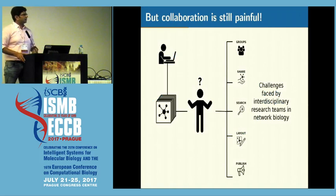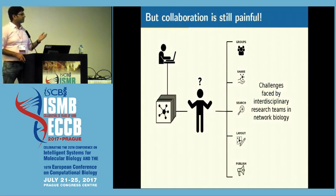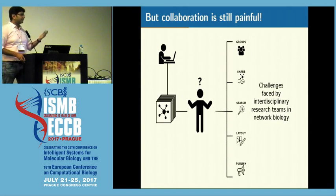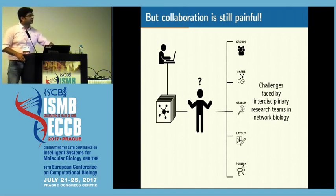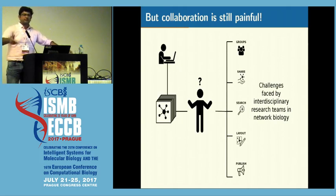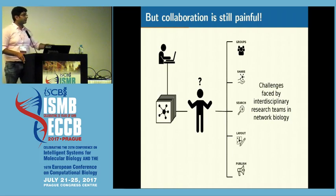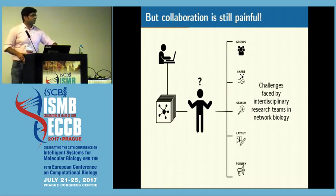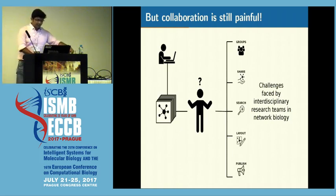For example, a computational biologist who generates hundreds or thousands of these networks can face multiple challenges. Like if they have to share these networks with colleagues, they would often use emails to send these files. And this experience can be confusing and frustrating at some point.